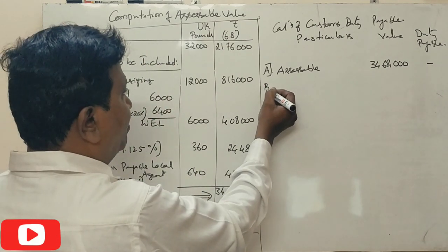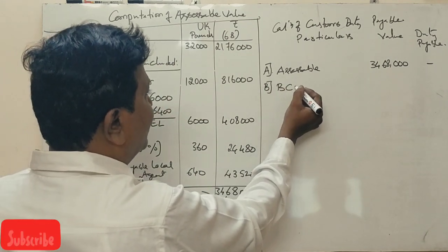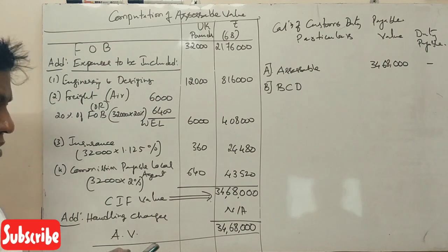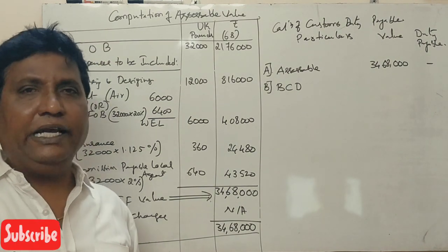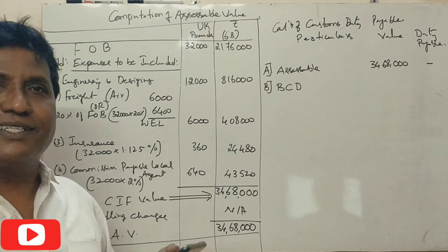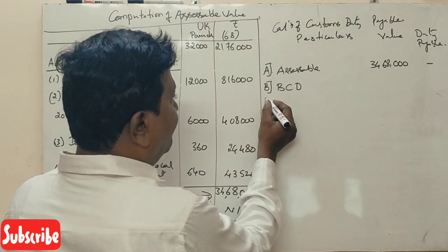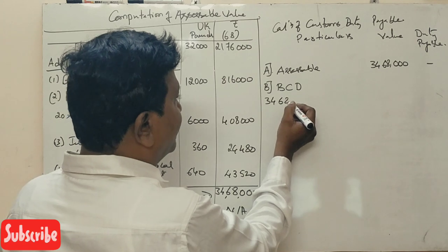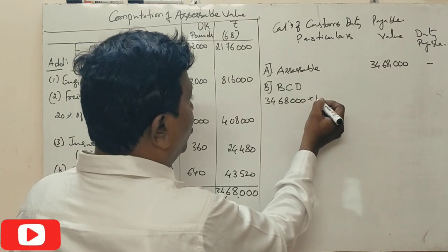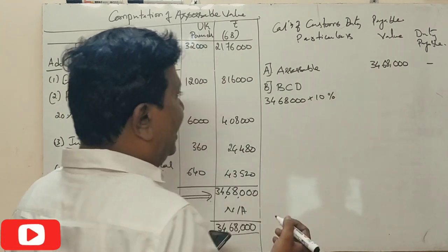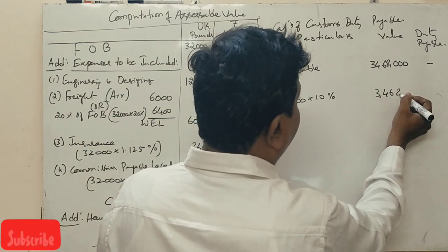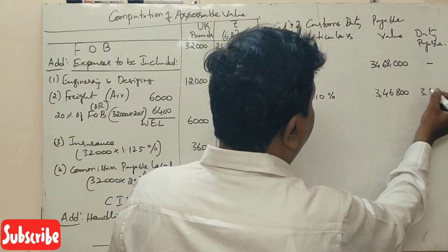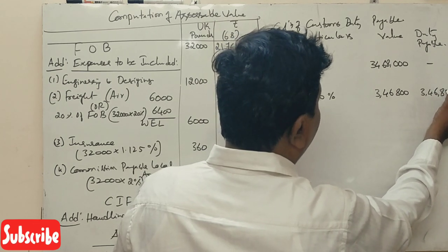Point B is basic customs duty. Usually 10% on assessable value. Assessable value 34,68,000 into 10%. 3,46,800 rupees.